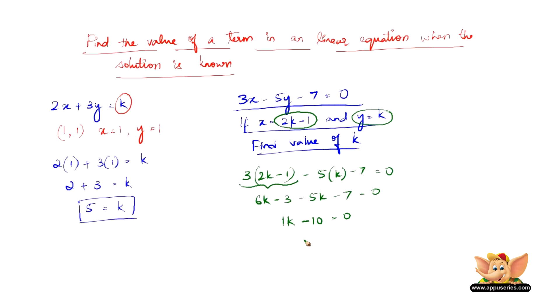So all we need to do is shift the minus 10 to the other side. We have 1k equals plus 10 because 0 plus 10 is 10. Therefore, we have k equals 10 by 1 which is nothing but 10. So here we are, the value of k is 10.